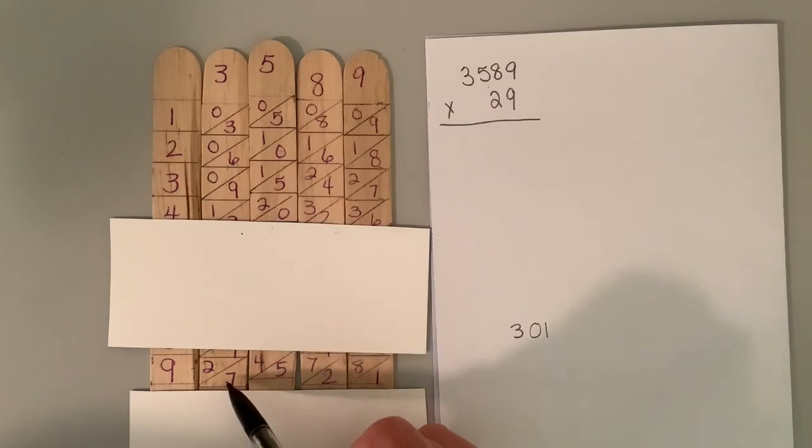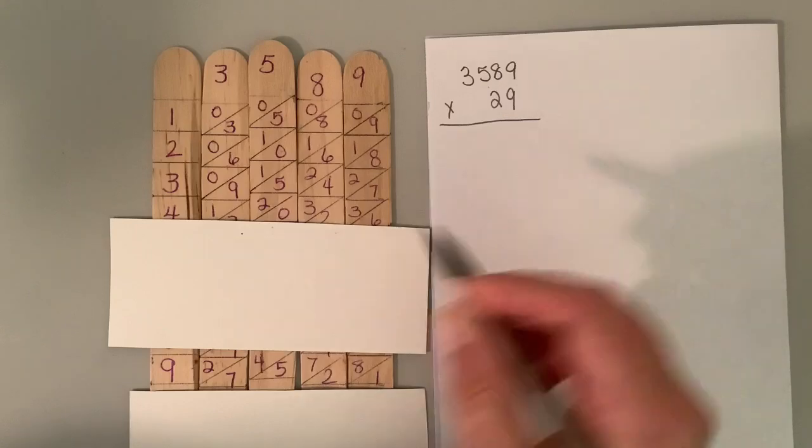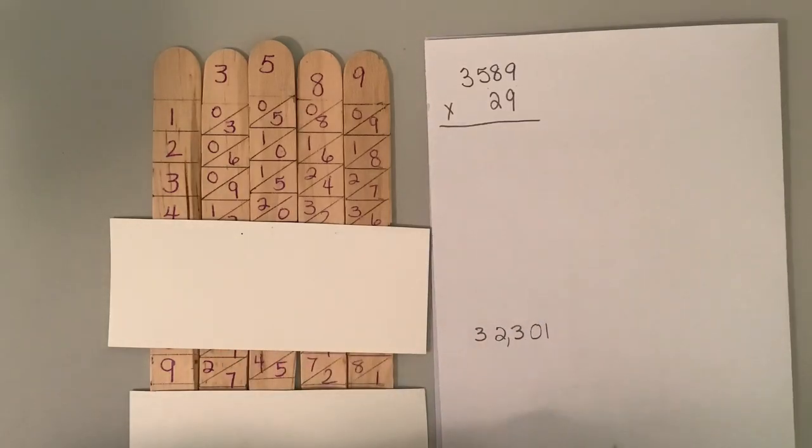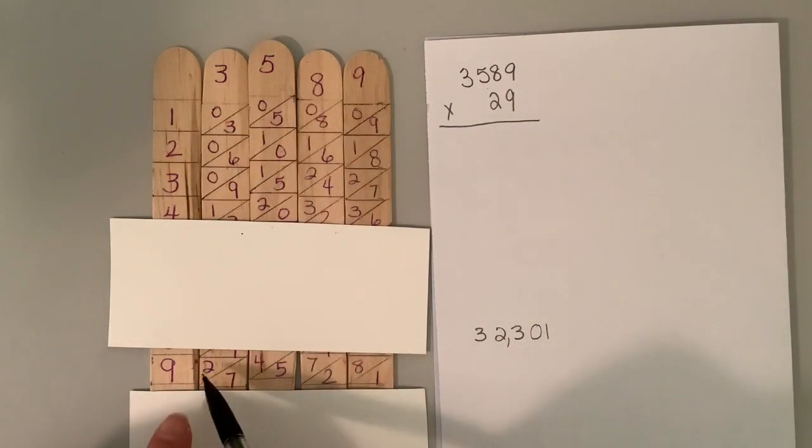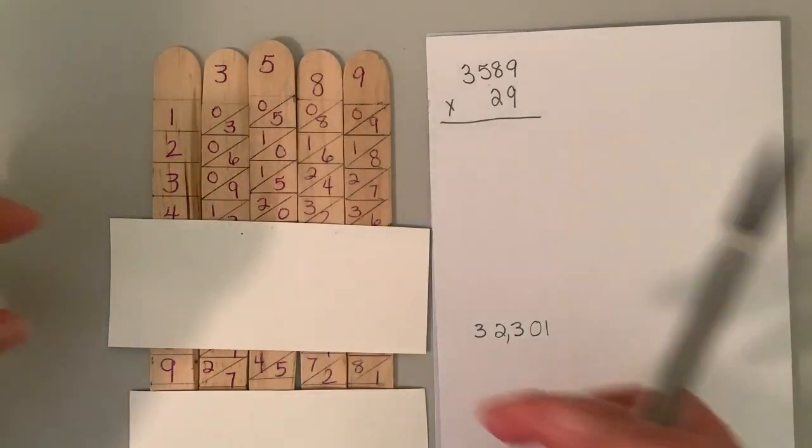And I carry the one. So seven plus four is 11 plus one is 12. Also carry the one that leaves me three. So, 3589 times nine is 32,301. And we checked that earlier in the video.